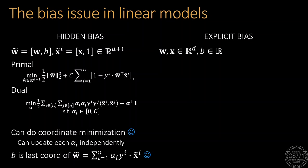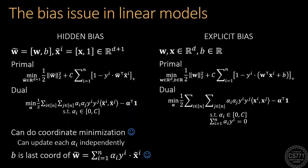On the other hand, if we have an explicit bias term, we get a dual problem that has an additional constraint that links all the dual variables together. Click on the link above to revisit the derivation of this dual.